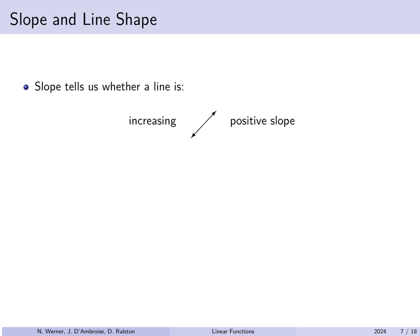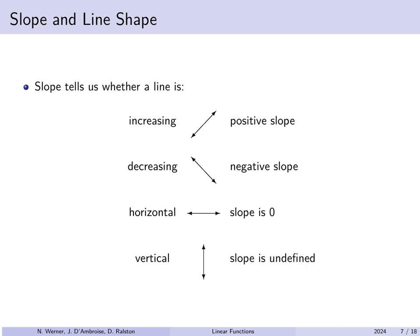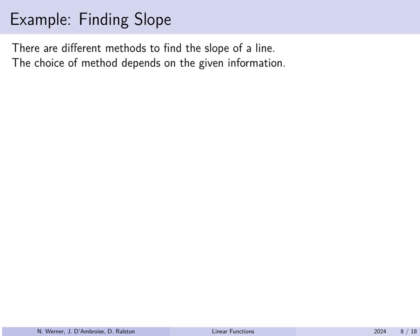The slope of a line tells us something about that line. If the slope is positive, the line is increasing — moving up from left to right. If the slope is negative, the line is decreasing — moving down from left to right. If the slope is exactly zero, the line is horizontal. However, if the line is vertical, there is no slope — the slope is undefined. The method you use to find slope depends on what information you have.